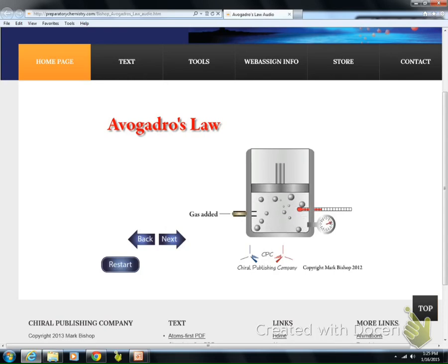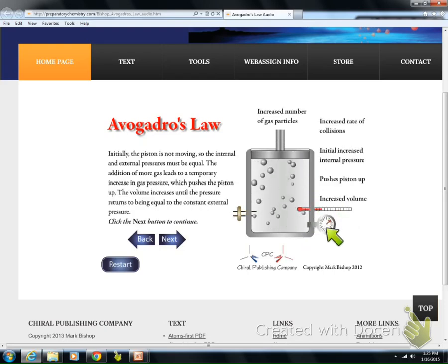Now our example is that the molecules are increasing, so the piston can now move and our volume can change. Notice the pressure and temperature stayed the same. We increased the number of gas particles, the rate of collisions increased, increasing the internal pressure pushing the piston up, thus increasing the volume.